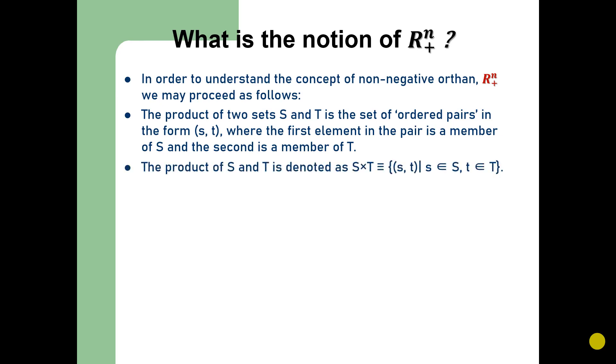The product set of S and T, denoted by S × T, is a set of ordered pairs such that s belongs to S and t belongs to capital T. One familiar set product is the commonly known Cartesian plane.